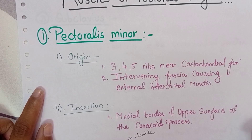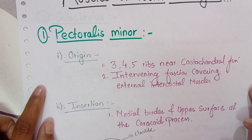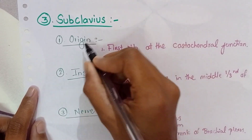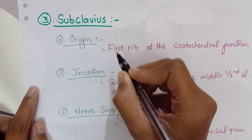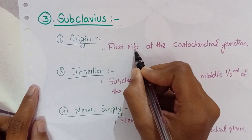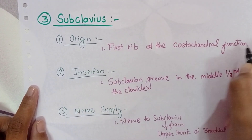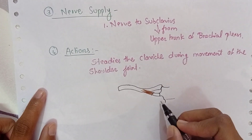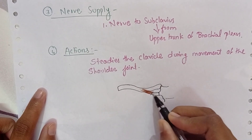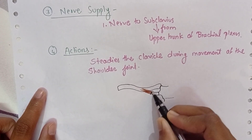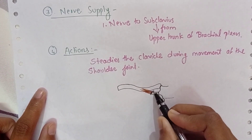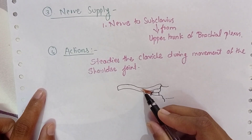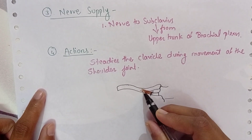Next we have to see about the subclavius muscle. The origin of this muscle is from the first rib at the costochondral junction. Here it is the first rib at the costochondral junction, and from here the subclavius muscle arises.